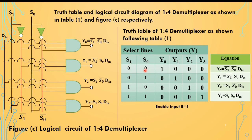For select 0, 0, that corresponds to s1_bar and s0_bar. So the two input terminals of the first AND gate are connected to the s1_bar line and the s0_bar line, and one terminal is connected to din. For y1, with select 0, 1, s1 is 0 so we use s1_bar. One terminal is connected to s1_bar, another terminal is connected to s0, and din is connected to the din line.